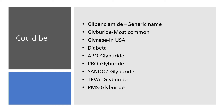Glybenclamide could come under different names depending on your country and the brand available. It could be Glybenclamide (the generic name) or Glyburide, the most common brand name. Glyinase is common in the United States. Diabeta is another very common one across the globe. Other names include Apo-Glyburide, Pro-Glyburide, Sandoz-Glyburide, Teva-Glyburide, PMS-Glyburide, and so on.